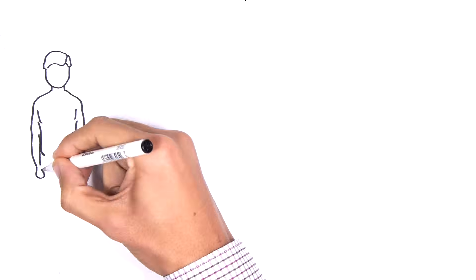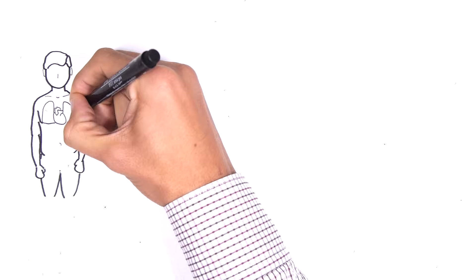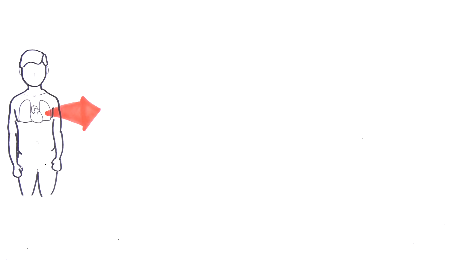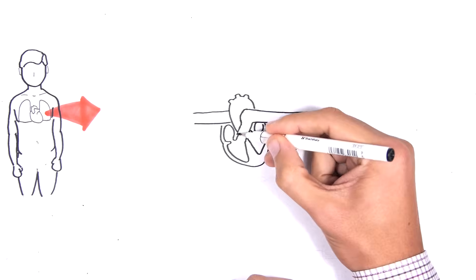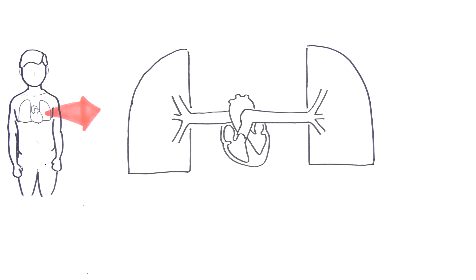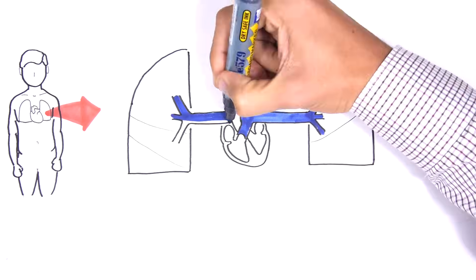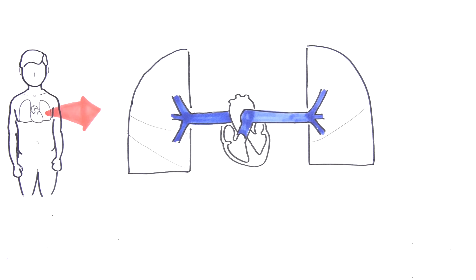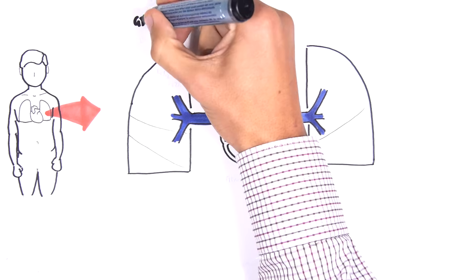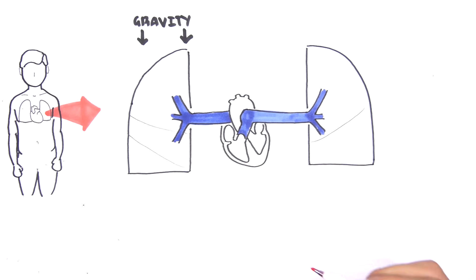Let's now try to understand the concept of ventilation and perfusion and why they differ in different zones of the lungs. Here we have two lungs. The heart pumps deoxygenated blood through the pulmonary artery into the lungs. In the upright position, the upper portion of the lungs are well above the level of the heart and the base of the lungs are at or below it. This has important implications on the perfusion as well as the ventilation, because gravity will affect how much blood goes to different areas in the lungs.